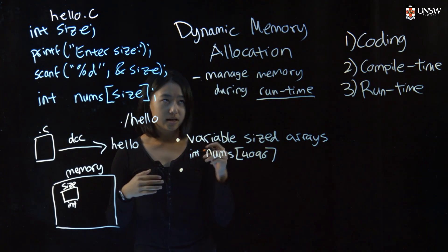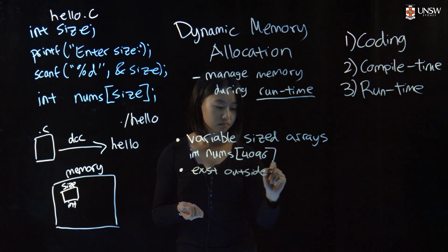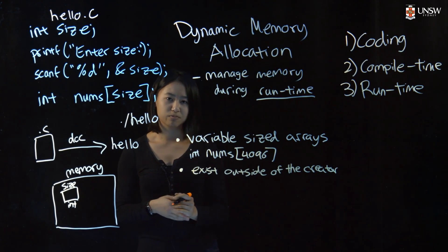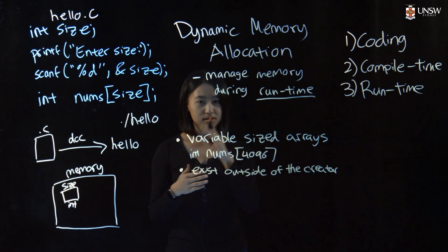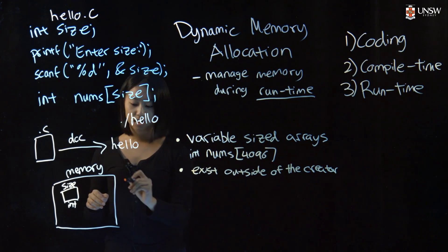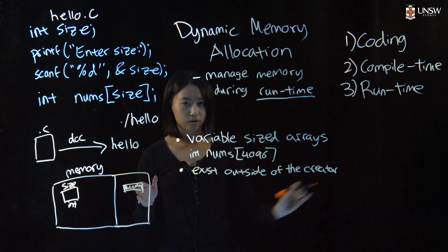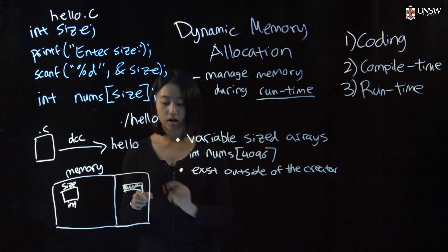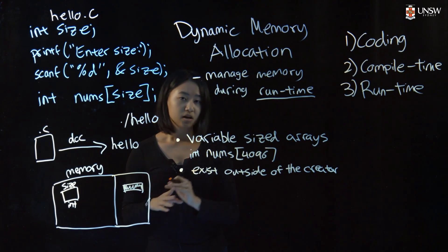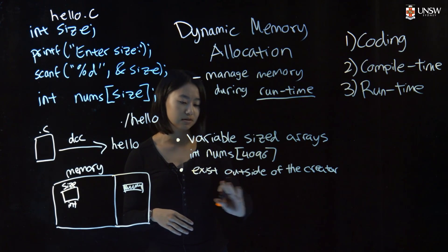Another great use of dynamic memory allocation is that it allows you to create variables that exist outside of the function that created them. Usually when we have a function, it has its own local variables, but once the function exits, all those variables disappear. That's not the case with dynamic memory allocation, because it doesn't allocate memory in the usual place — it allocates in a different part of memory. Even when the function that created it is destroyed, this variable will continue to exist as long as you tell it to be there. You have to explicitly tell it when you don't need that variable anymore. Instead of passing around a whole chunk of integers, you can just pass around a pointer to this variable.